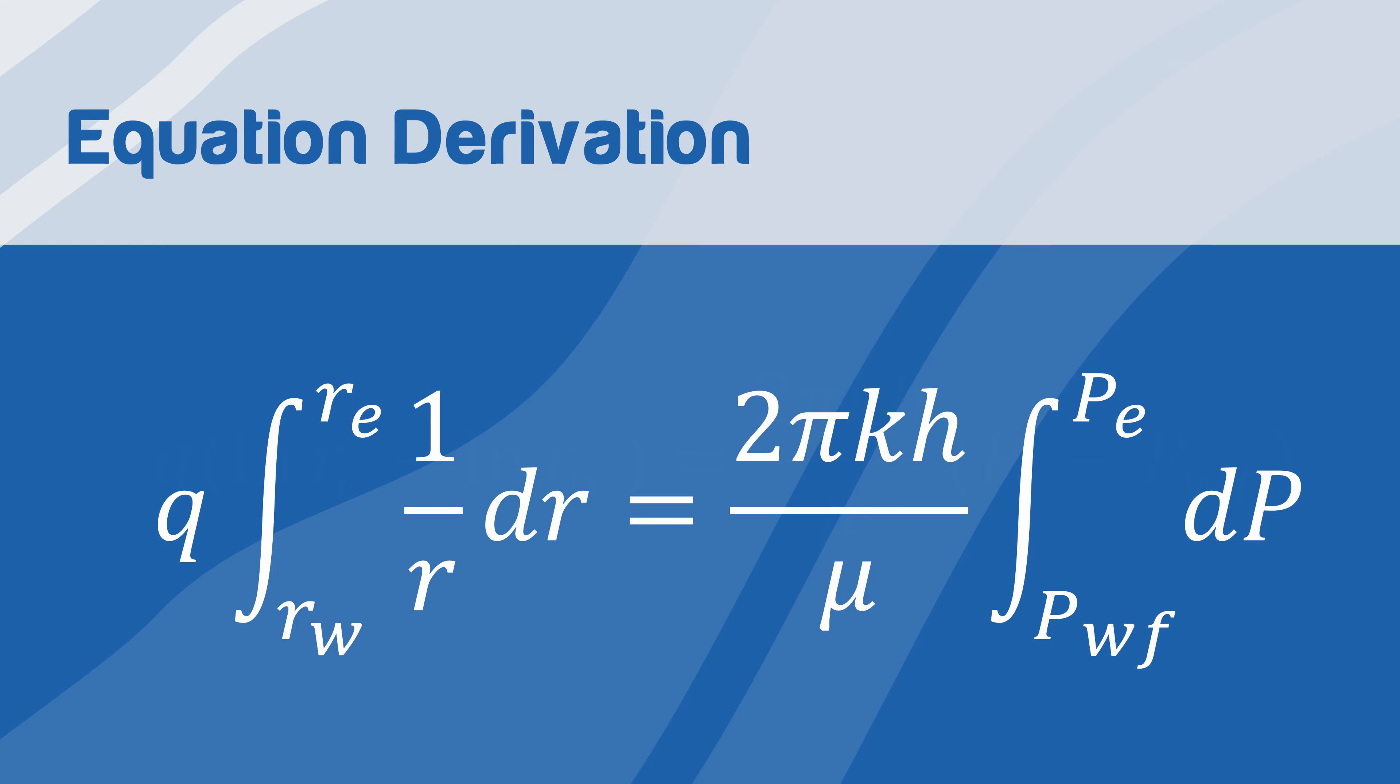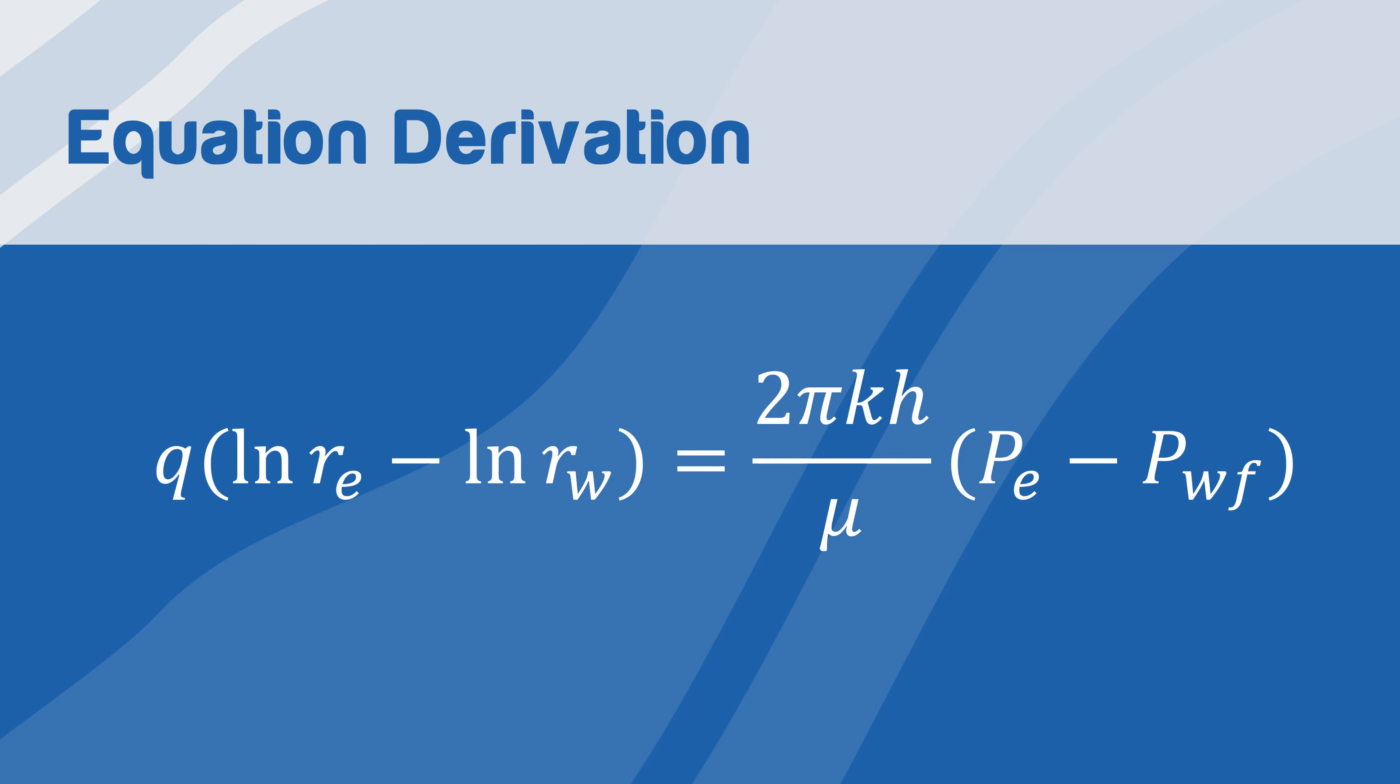Then, we integrate the equation with the given boundary condition to obtain q ln Re minus ln Rw equals 2πkh over μ Pe minus Pwf.